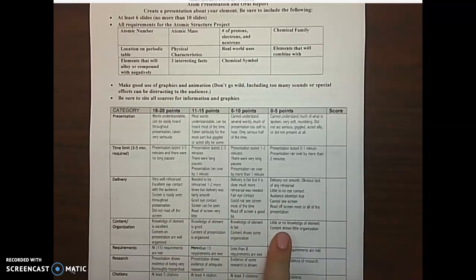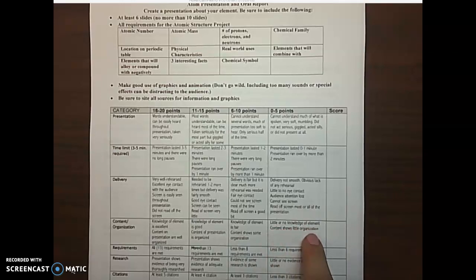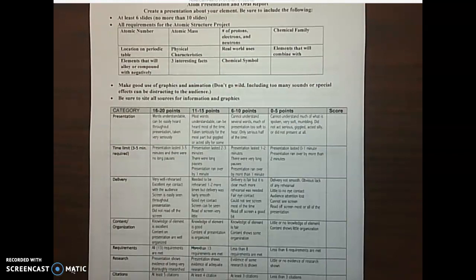If it's not organized, if you just slap some words on a sheet of paper, I'm not giving you full credit for that. For requirements: if you met all 13 of those requirements, then you get full credit. If you have less than 13, you'll get partial credit. And if you have less than six, you'll get zero to five.